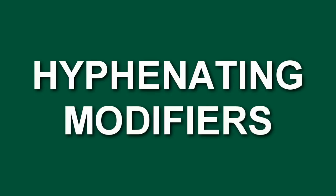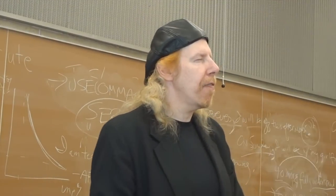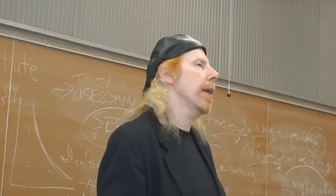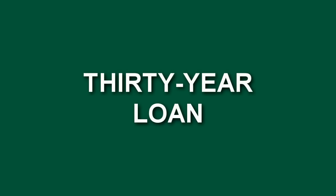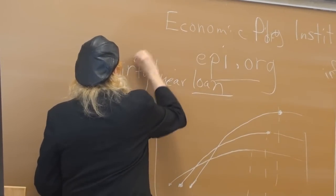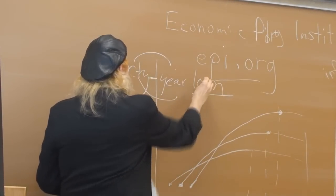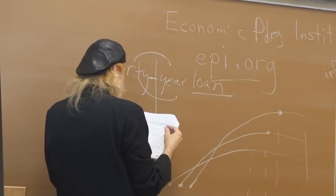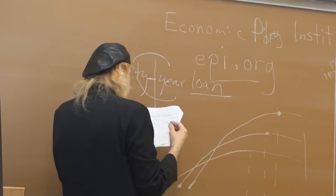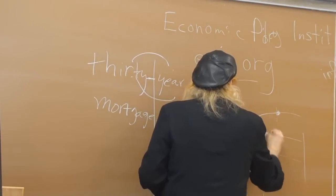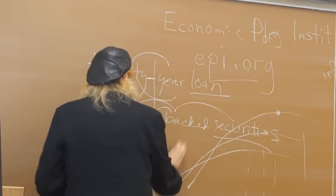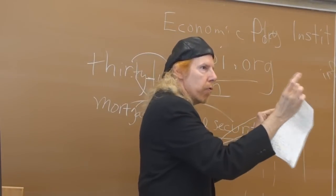We look for words modifying a noun to be hyphenated. For example, '30-year loan' — 'loan' is your noun, '30' and 'year' both modify 'loan,' so you want a hyphen between '30' and 'year.' Another example would be 'mortgage-backed securities' — both 'mortgage' and 'backed' modify 'securities,' so put a hyphen in there and join those words.